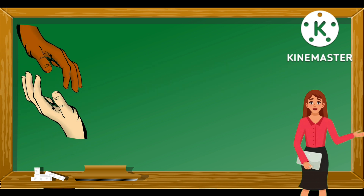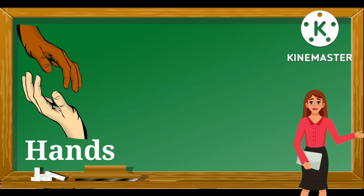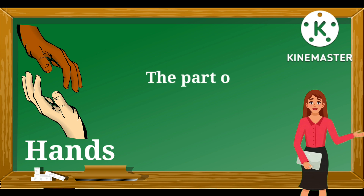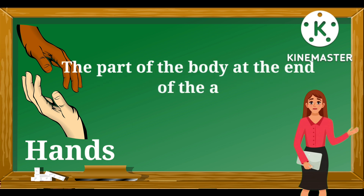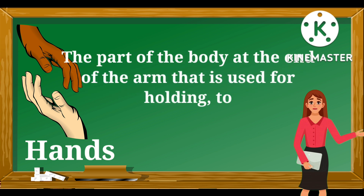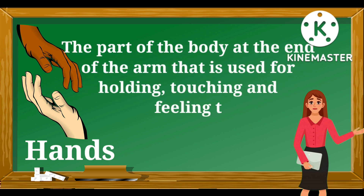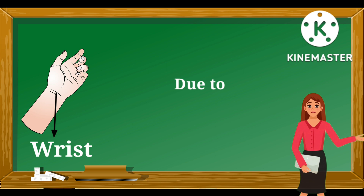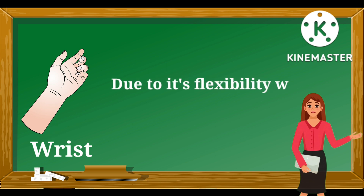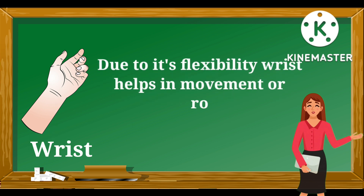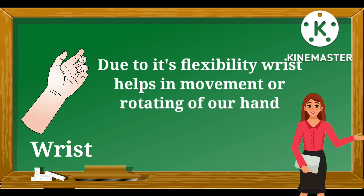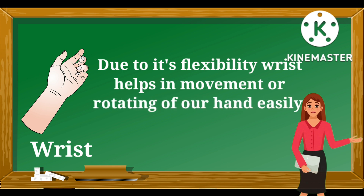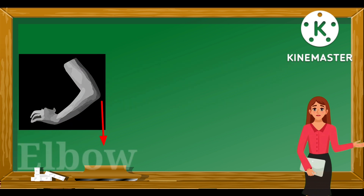These are hands — H-A-N-D-S — the part of the body at the end of the arm that is used for holding, touching, and feeling things. This is a wrist — W-R-I-S-T. It connects the forearm with our hand. Due to its flexibility, the wrist helps in movement and rotation of our hand easily.